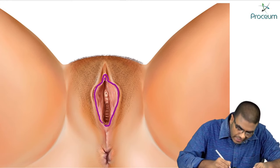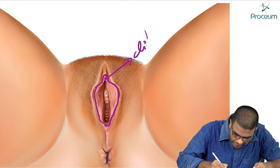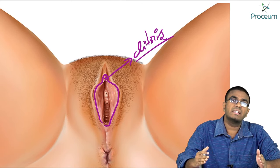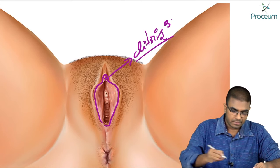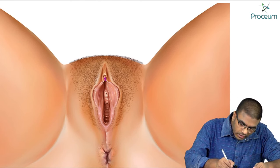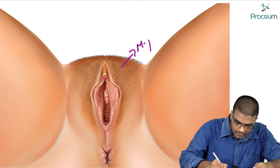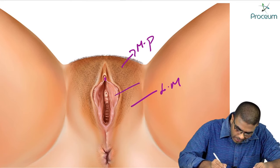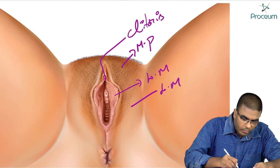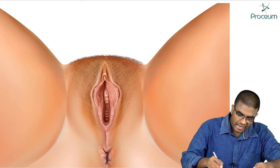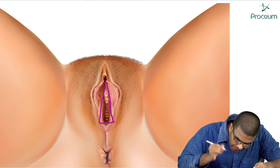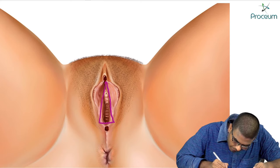This erectile body over which the labia minora fuses anteriorly is known as the clitoris. We have now discussed mons pubis, labia majora, labia minora, and clitoris. The vestibule is a triangular space which is present between the clitoris anteriorly and the fourchette posteriorly.